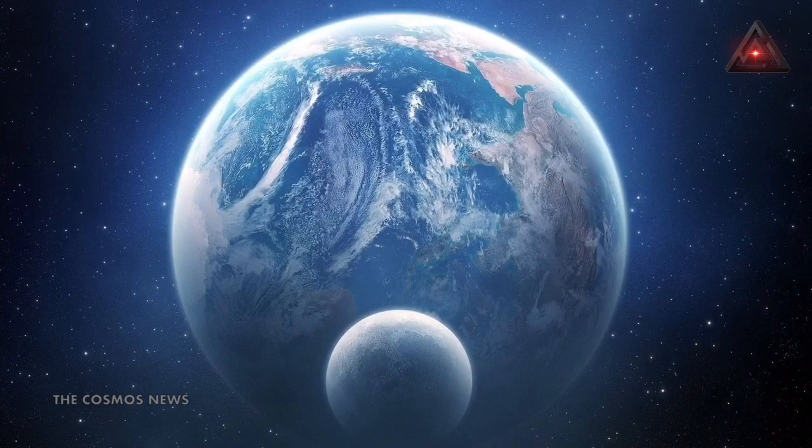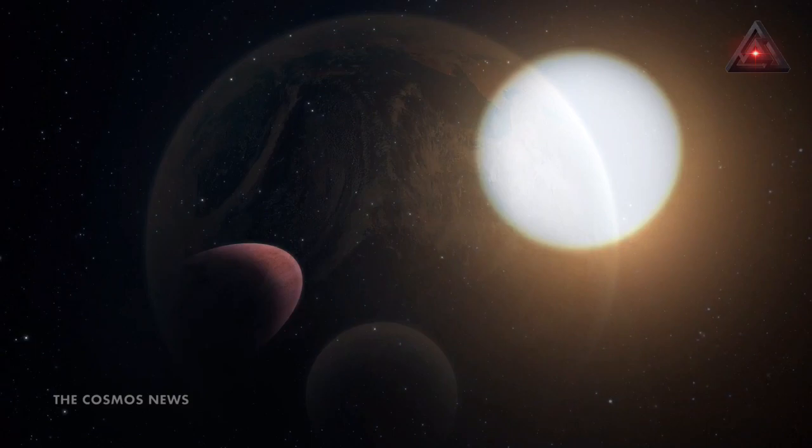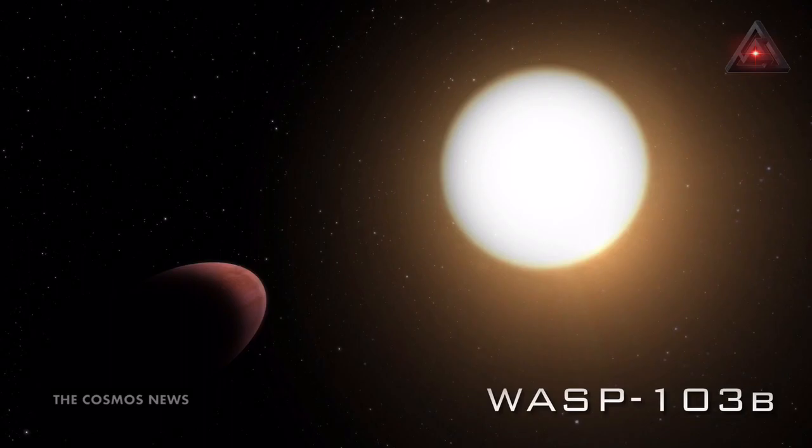Turns out not all planets are nice and spherical like Earth. The European Space Agency, ESA, says it's found a planet shaped like a rugby ball in the constellation Hercules, according to a blog post from the agency.